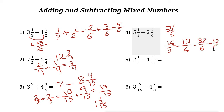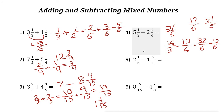Thirty-two over six minus thirteen over six: subtract the numerators — thirty-two minus thirteen is nineteen, giving nineteen over six. To convert this back to a mixed number, divide nineteen by six: you get three with a remainder of one, so the answer is three and one-sixth. There are two more examples here that you can do yourself.